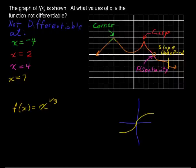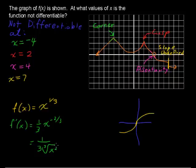x to the 1/3. And then if I took the first derivative of that, I would get f' of x equals 1/3 x to the negative 2/3, or that is equal to 1 over 3 times the cube root of x squared.